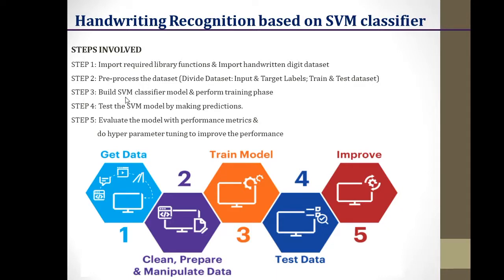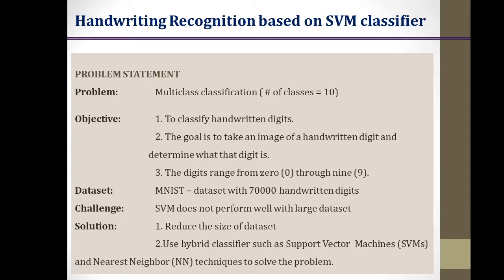Step three is to build the machine learning classifier model based on a suitable algorithm. Here we have chosen support vector machine because it is one of the good classifying algorithms, and we are going to model the SVM classifier and do the training process. Step four is to do the testing process or make predictions, and step five is to evaluate the performance of the model. If we are not happy with the model's performance, we can improve it by tuning the hyperparameters.